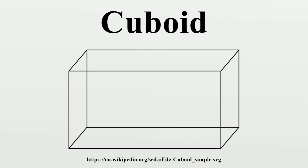Cuboid shapes are often used for boxes, cupboards, rooms, buildings, etc. Cuboids are among those solids that can tessellate three-dimensional space. The shape is fairly versatile in being able to contain multiple smaller cuboids, e.g., sugar cubes in a box, boxes in a cupboard, cupboards in a room, and rooms in a building.